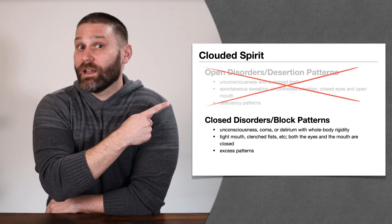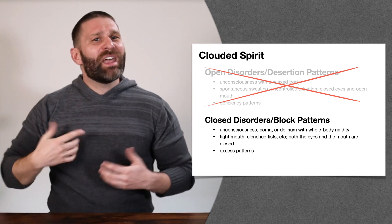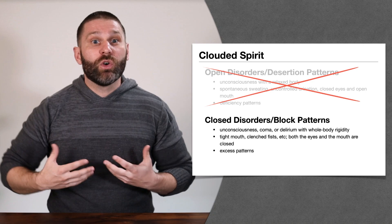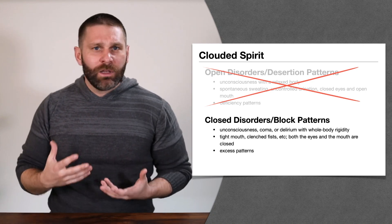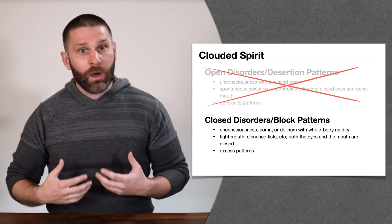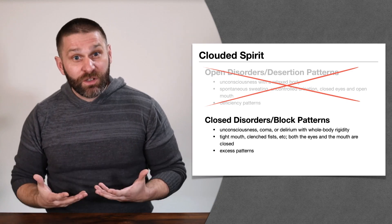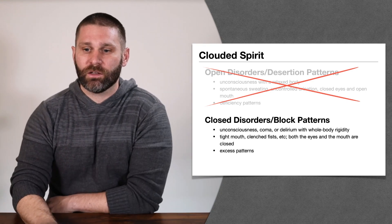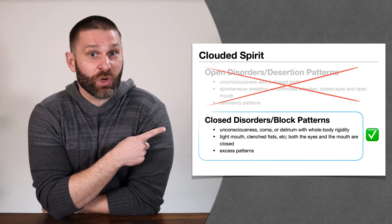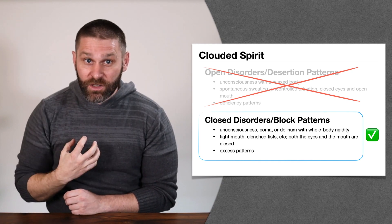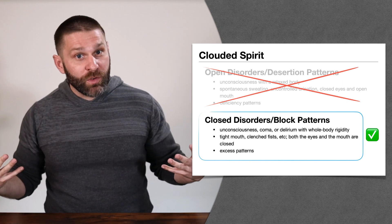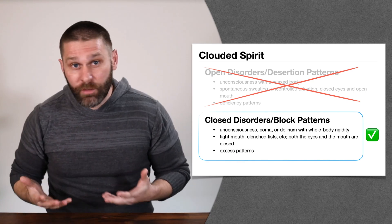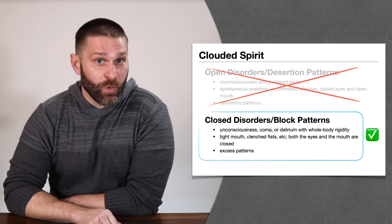In this category, we are not dealing with open disorders or desertion patterns. Those are treated with herbs like fuzi, ganjiang, and renshen — strongly tonifying Yang and Qi for deficiency patterns where everything is open and leaking out. In this category, what we're treating is closed disorders or block patterns, where there's an excess pathogen blocking the sensory orifices. So we use aromatic substances to open up those orifices and awaken the spirit — specifically closed disorders and block patterns.